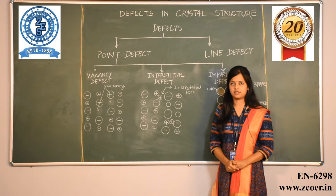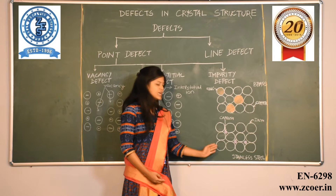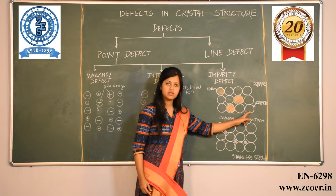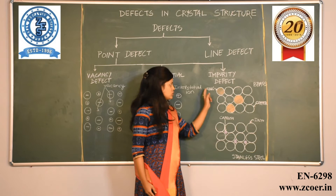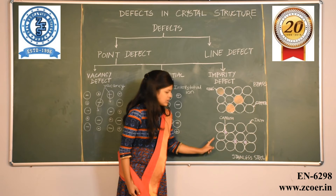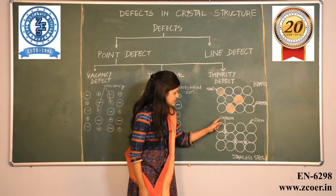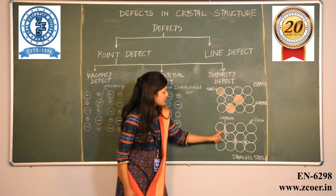The third type is the impurity defect, which has two subtypes: substitution impurity defect and interstitial impurity defect. In substitution impurity defect, the regular cations — for example, copper — are replaced by different cations such as zinc. The orange-colored zinc cations substitute the regular copper cations. In interstitial impurity defect, the different cations occupy interstitial positions. An example is stainless steel, an alloy where iron is the regular cation and carbon atoms are introduced into the interstitial positions.